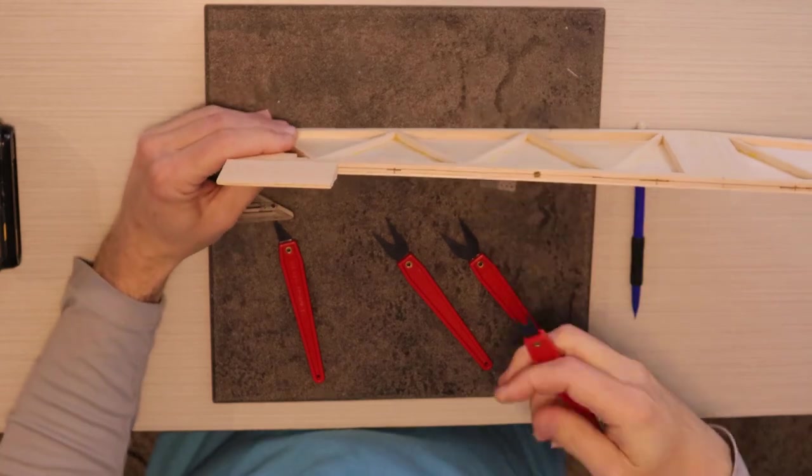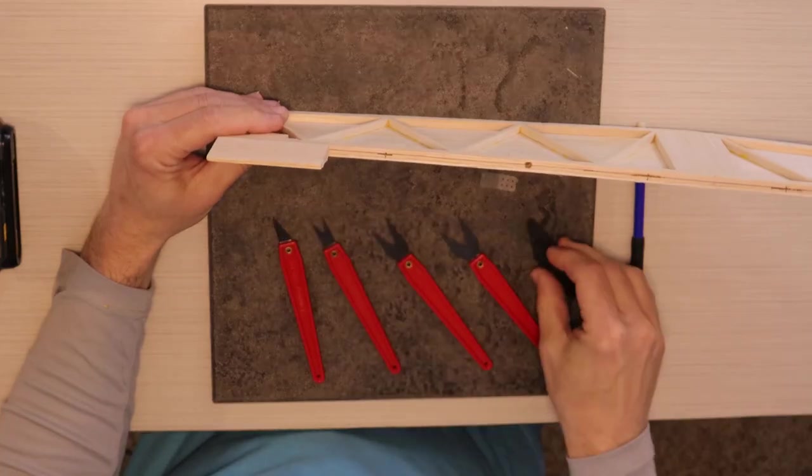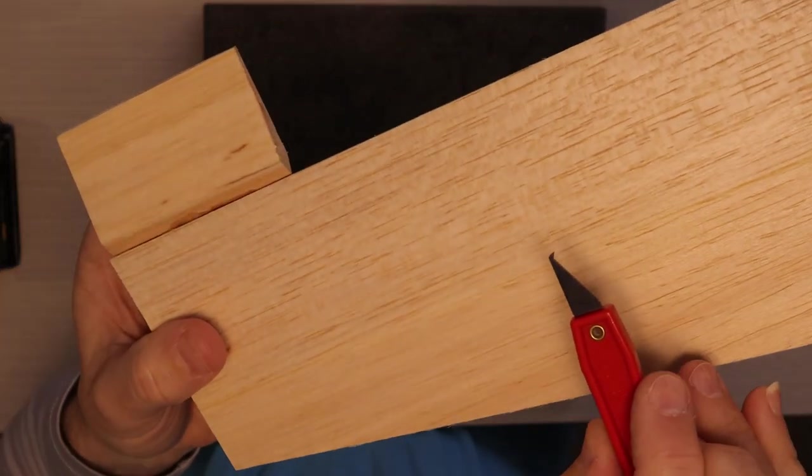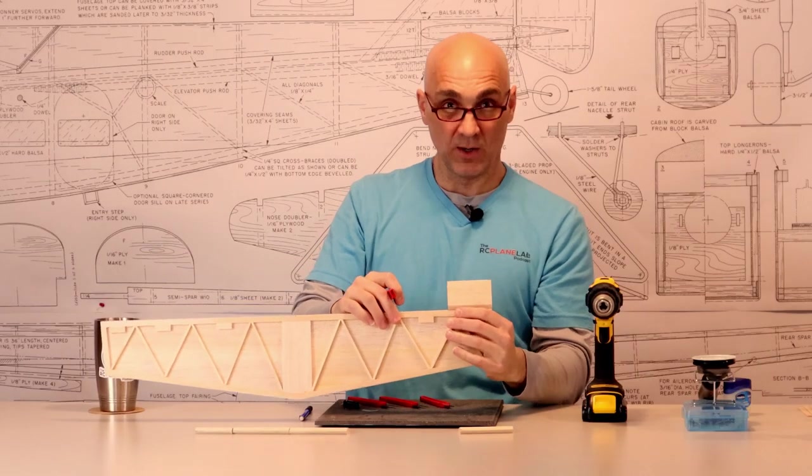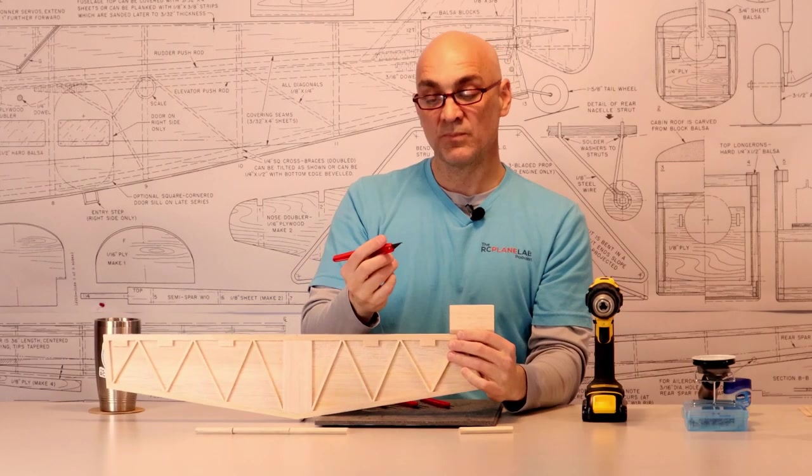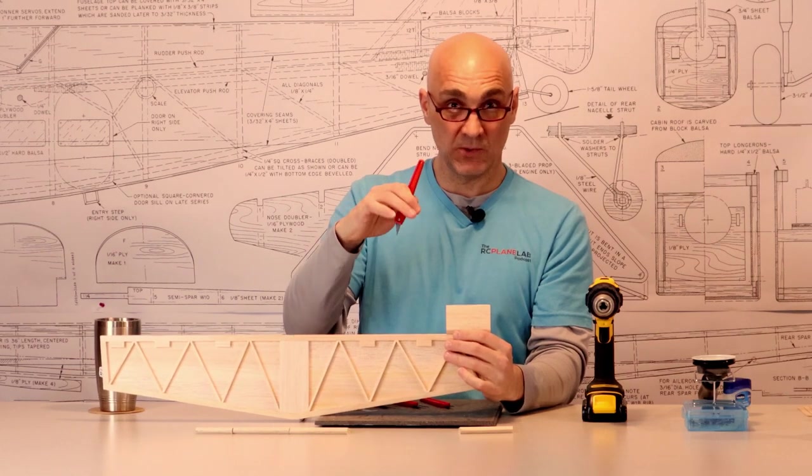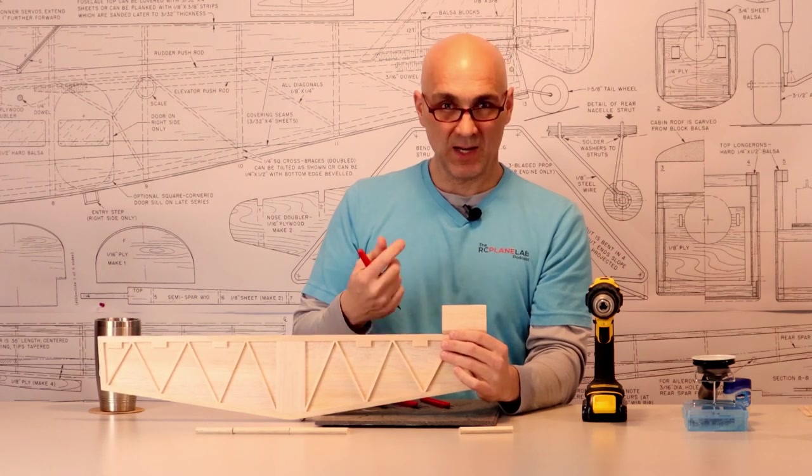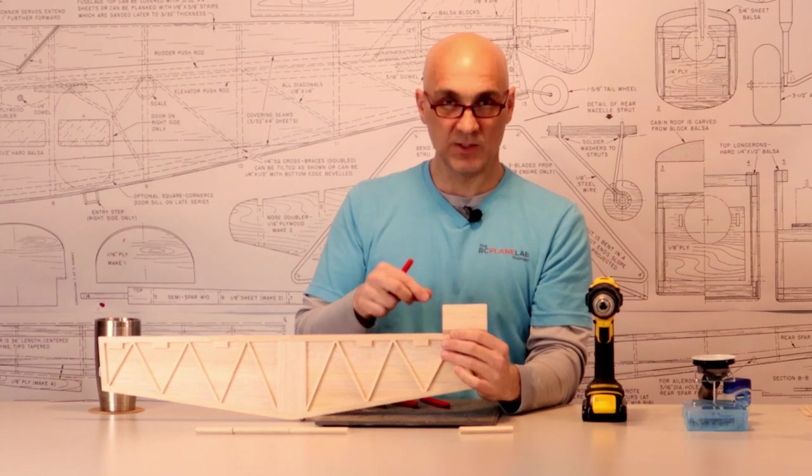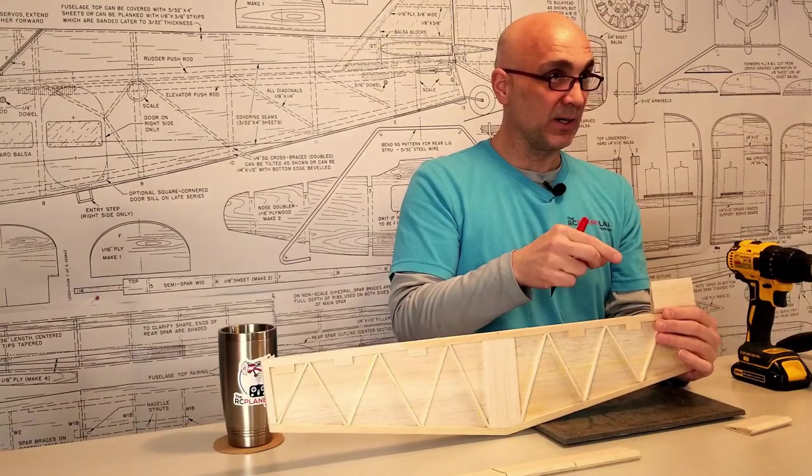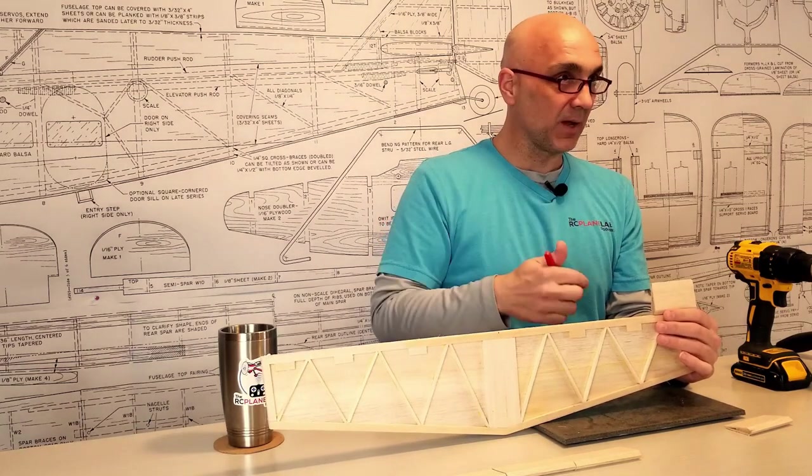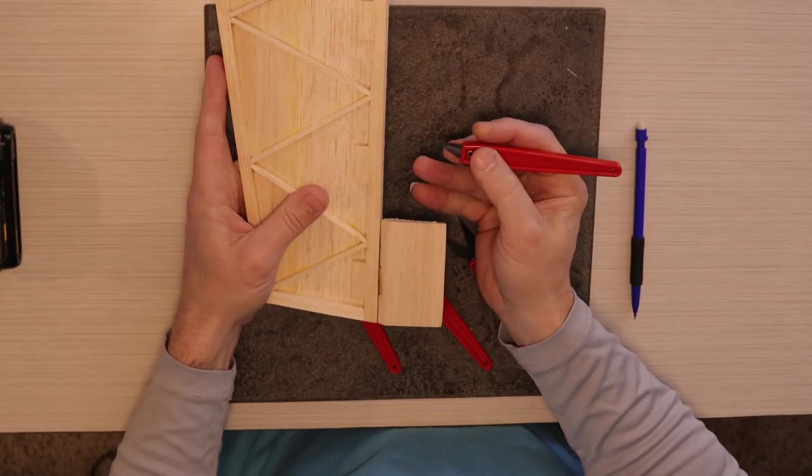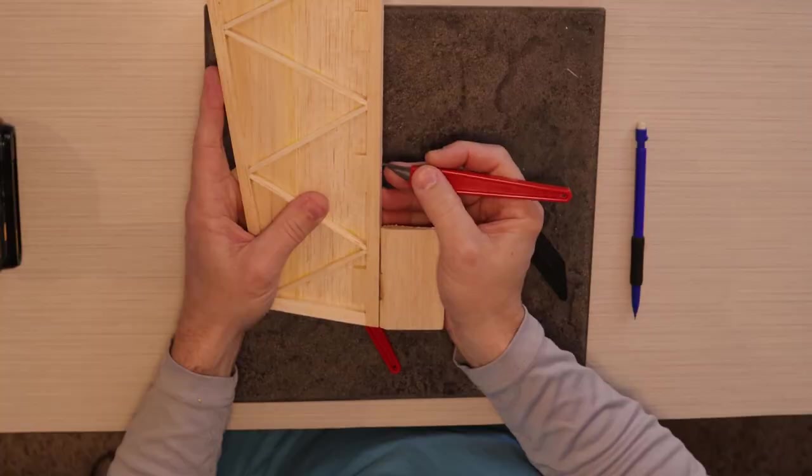And then part of the Dubro kit comes with this little hook shaped tool right here. And this is made to do what I was talking about in our other video regarding the CA type hinges. This hook is designed to reach in there and pull material out of this slot. That's why I like these so much, because as I said in that other video, I like to remove material to make room for my hinge instead of my hinge just jamming it in there and separating the fibers and possibly creating lumps in my control surface.